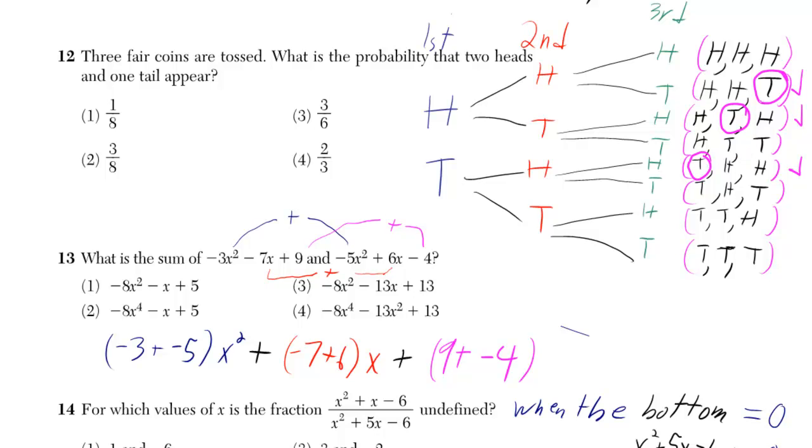So there's three possibilities for where you can put only one tail in this ordered list. But you'd have to know that there's eight different possibilities. How could you know that there's eight different possibilities?